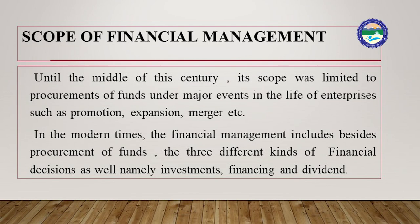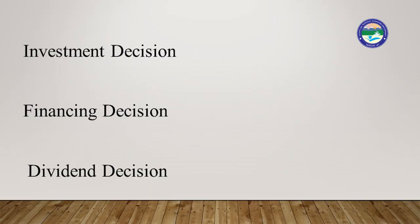The scope of financial management has undergone changes over the years. Until the middle of this century, its scope was limited to procurement of funds under major events such as promotion, expansion, and mergers. But in modern times, financial management includes, besides procurement of funds, three different kinds of financial decisions: investment decisions, financing decisions, and dividend decisions.